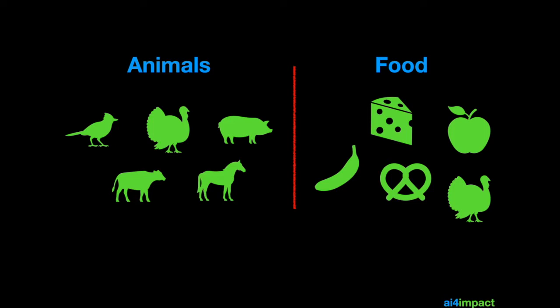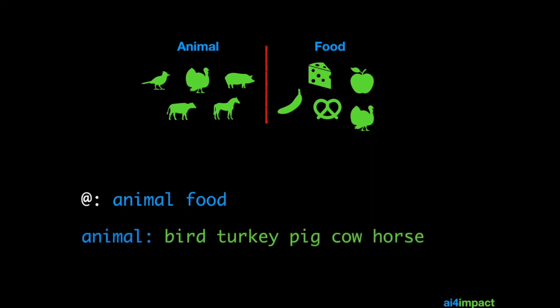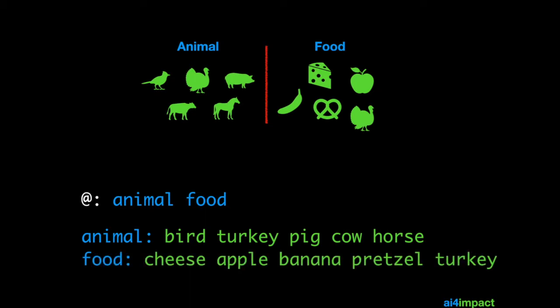How can I capture this as rules for my chatbot? Well the way we do it is to first declare two types: animal and food. And for animal I have the five different things: bird, turkey, pig, cow and horse. And similarly for food I've got the various food types. The funny colon symbol is really a type creator function.